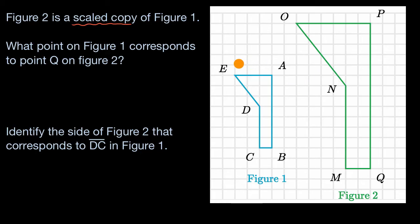So for example, if we were to compare segment EA right over here, it looks like it corresponds to segment OP. And the length of EA is three, the length of OP is one, two, three, four, five, six.